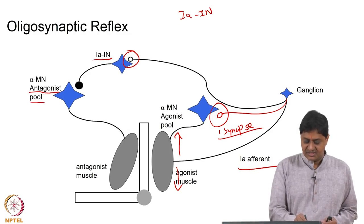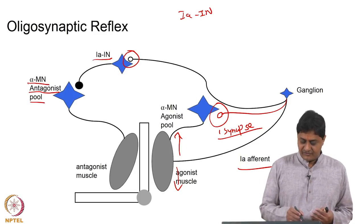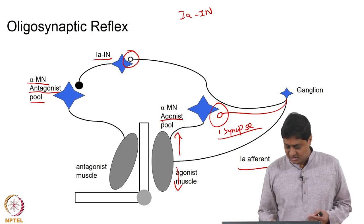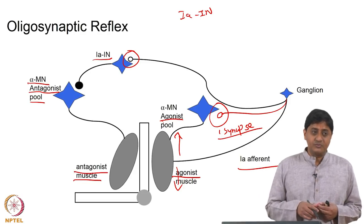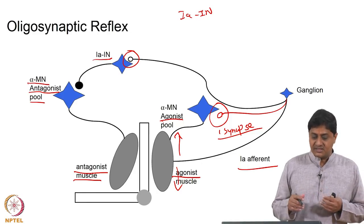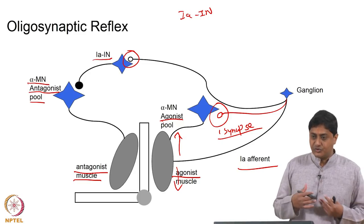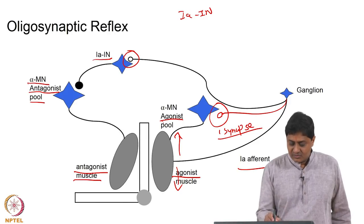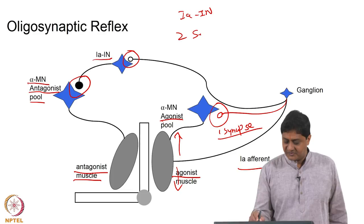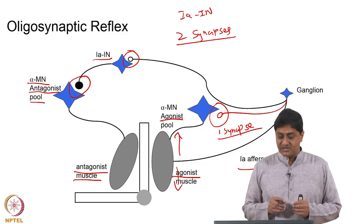So this is the antagonist muscle's alpha motor neuron. Why does it do that? Because the stretching of the agonist muscle may be due to the contraction of the antagonist muscle. This negative feedback ensures that if there is a need for that muscle to contract, the probability that it will contract will be relatively low for the next few tens to hundreds of milliseconds.